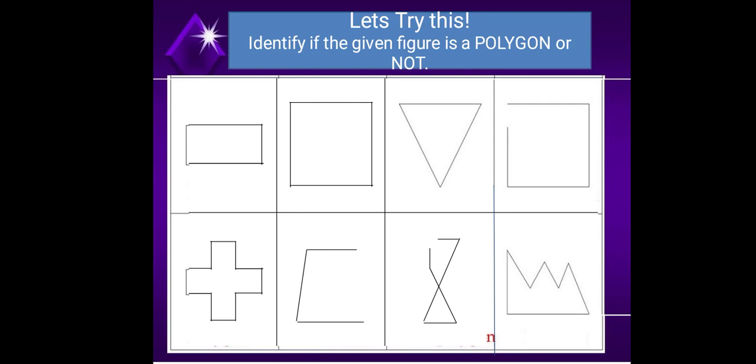As we can see, there is an open line here. Fifth image, the cross. Yes, it is a polygon because it is a closed figure and there is no open line.